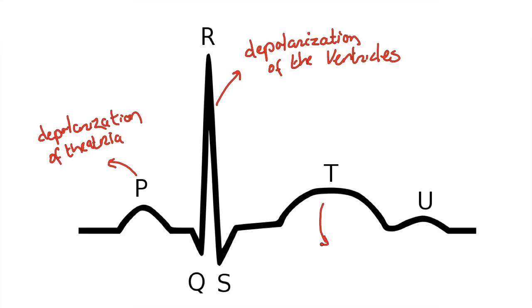Then we have the T wave, which comes after the QRS complex. And this shows the repolarization of the ventricles.